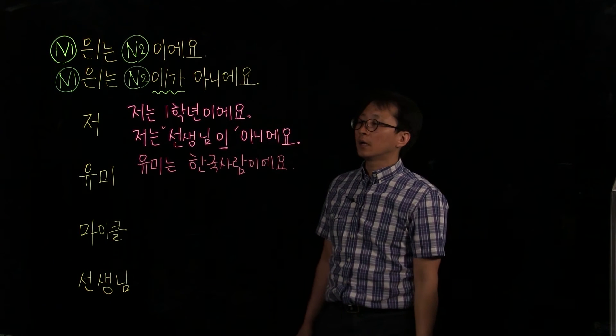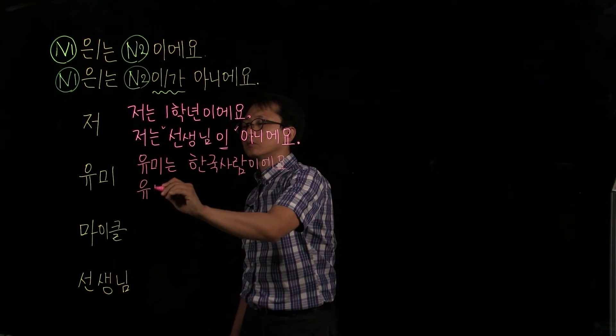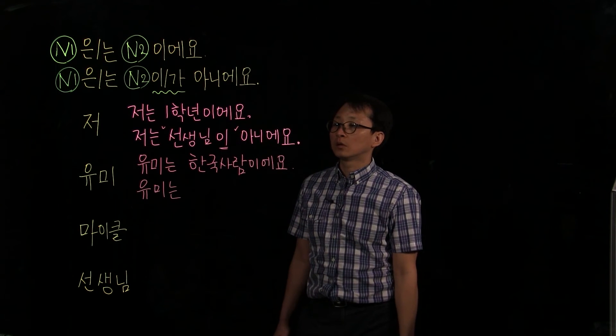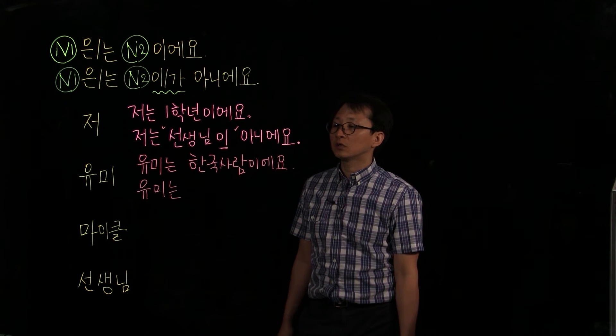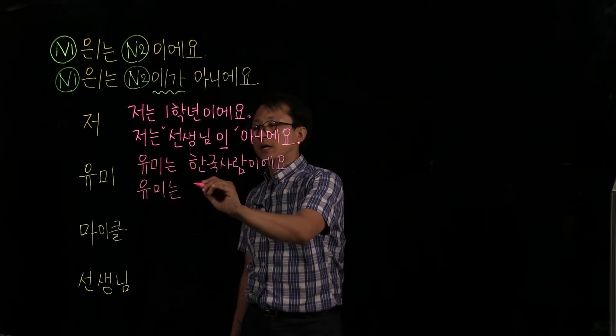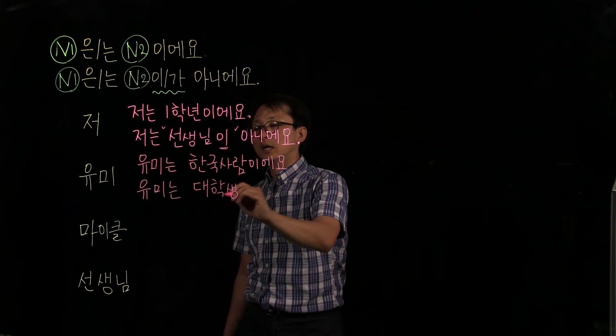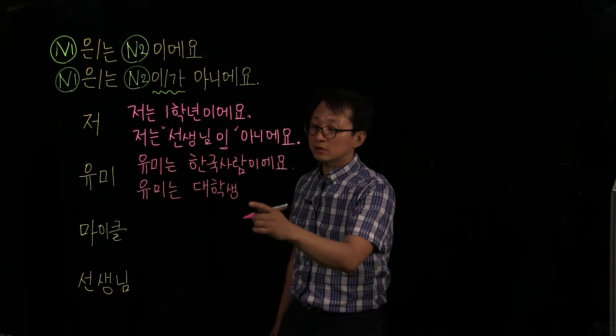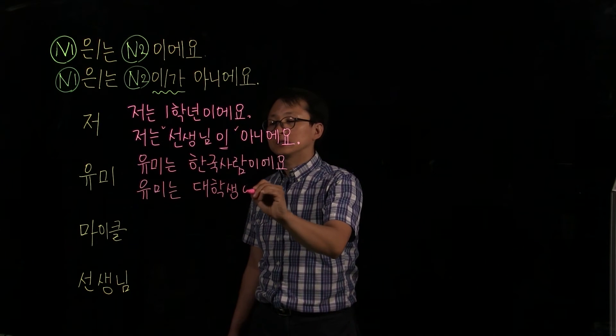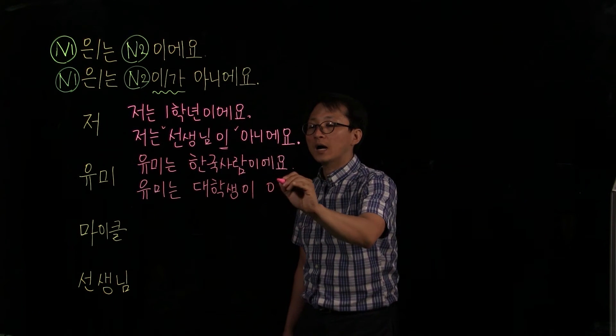And let's talk about what Yumi is not. Then 유미는. Let's say she is not college student when she already graduated or something. So what's the college student? 대학생. And for the negative sentence, you should consider one of these forms, a particle, after this noun. 대학생이. So there's a consonant, you start without consonant, 대학생이 아니에요.